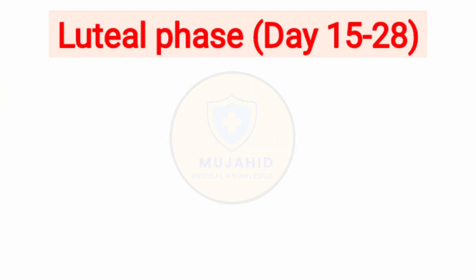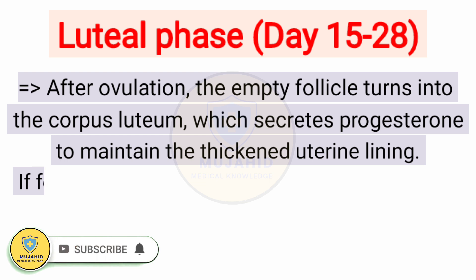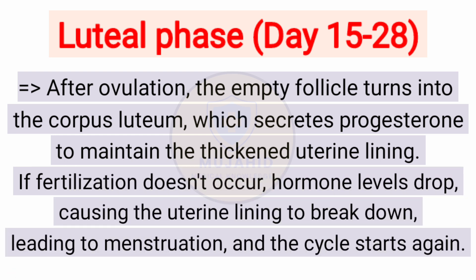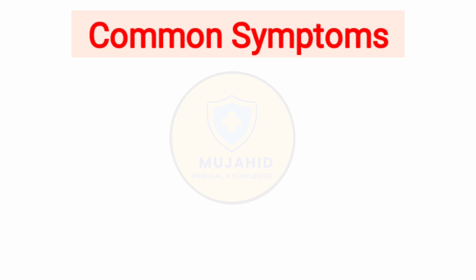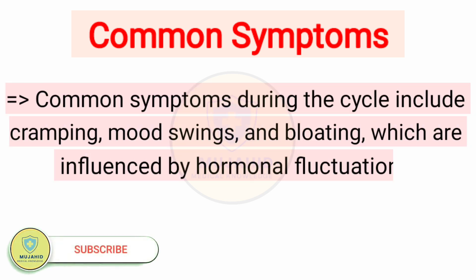Luteal phase, Day 15 to 28: after ovulation, the empty follicle turns into the corpus luteum, which secretes progesterone to maintain the thick uterine lining. If fertilization doesn't occur, hormone levels drop, causing the uterine lining to break down, leading to menstruation, and the cycle starts again. Common symptoms during the luteal phase include cramping, mood swings, and bloating, caused by hormonal fluctuations.